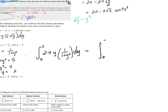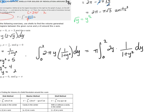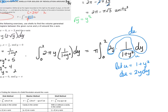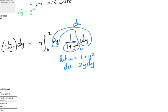Rewriting as π times the integral from 0 to 2 of 2y/(1 + y²) dy, we recognize this calls for u-substitution: let u = 1 + y², so du = 2y dy. Changing limits: when y = 0, u = 1; when y = 2, u = 5.